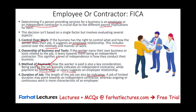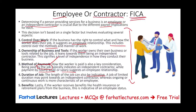The IRS doesn't look at one factor — they look at all factors and, based on these, will classify the individual as an employee or a contractor if there is any dispute. Also, benefits matter: if you provide health insurance or a retirement plan to a worker, it looks like you have an employee. Now let's go ahead and start to discuss FICA.